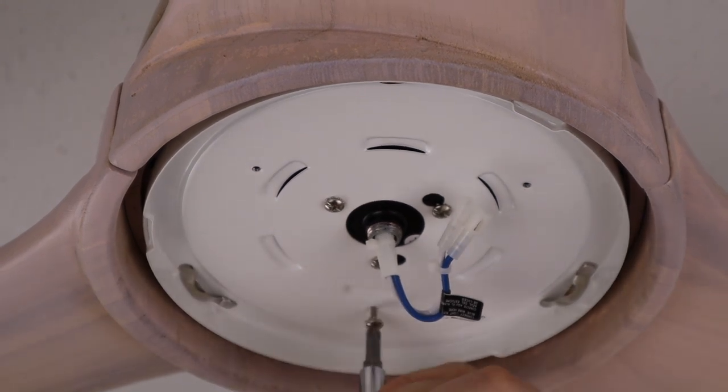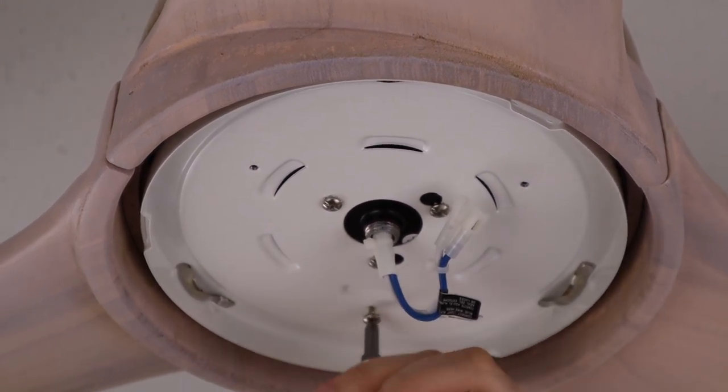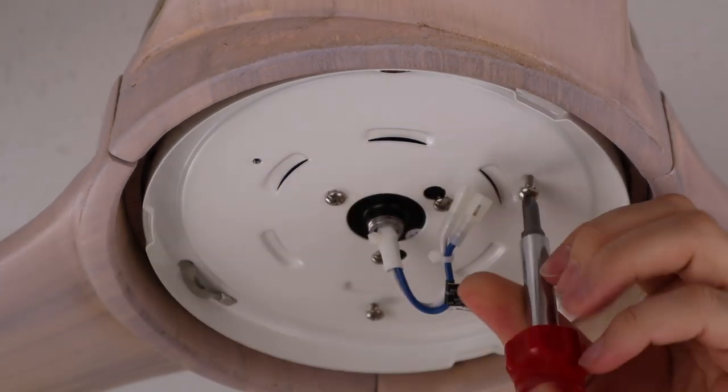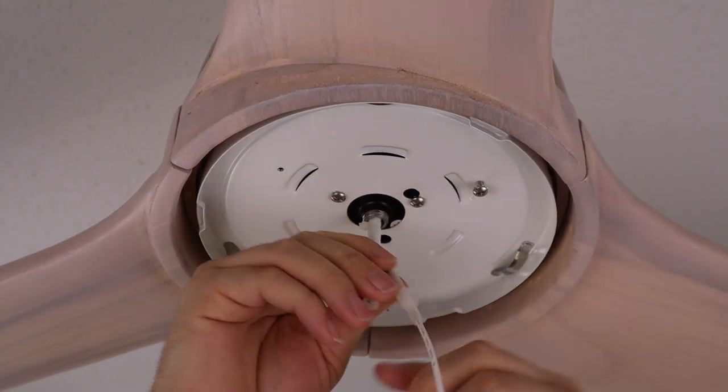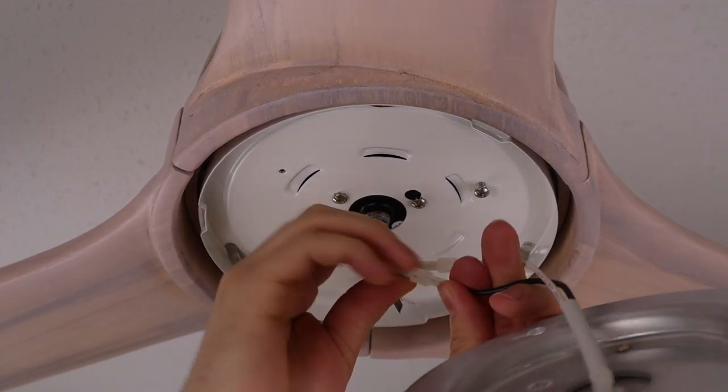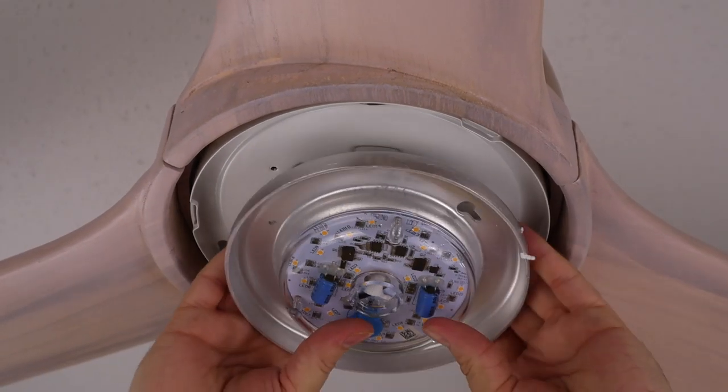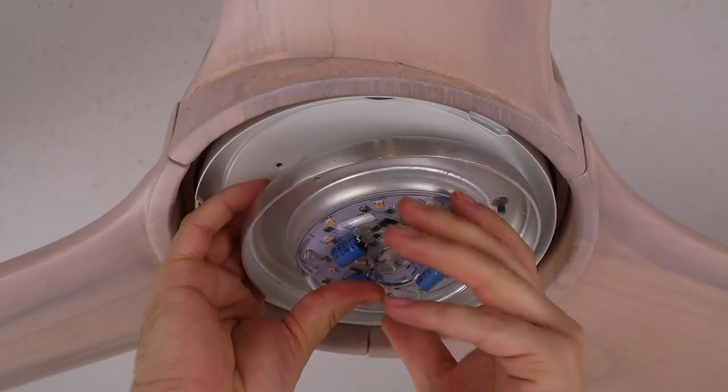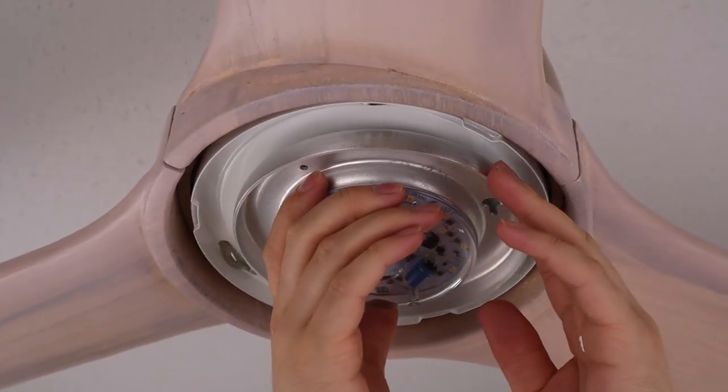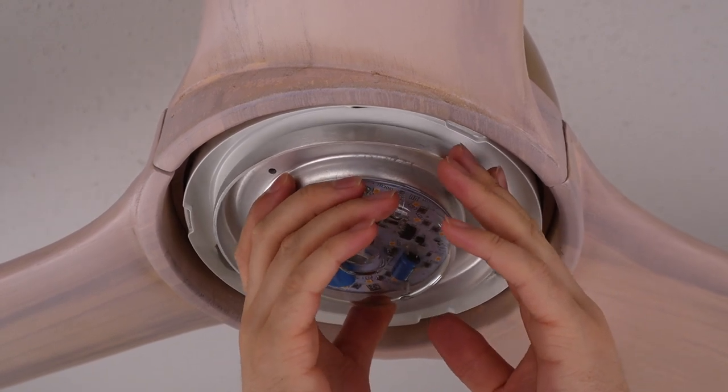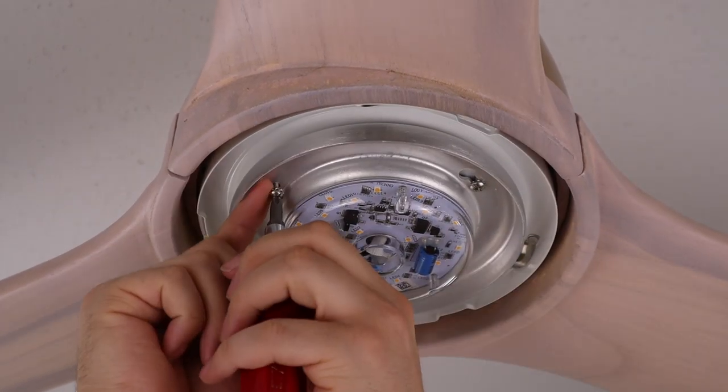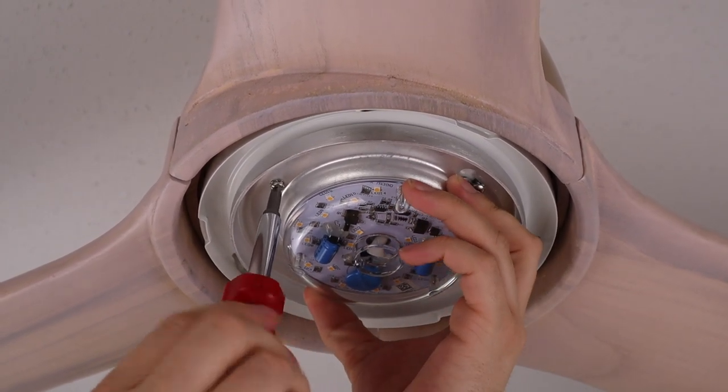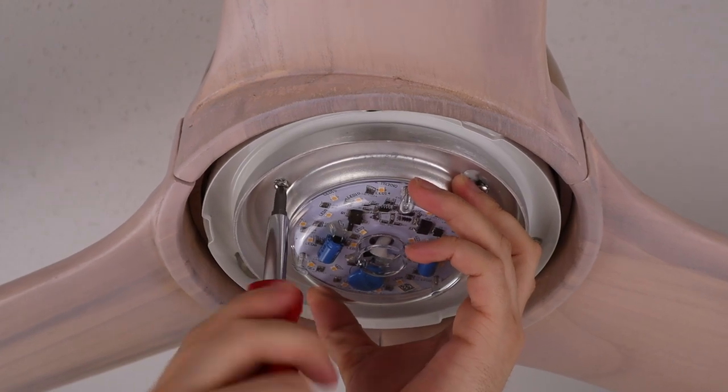Thread two more screws about halfway into the upper switch housing; again, it does not matter which positions you choose. Connect the LED assembly using the single pin connectors. Raise the LED assembly to the fan, engaging the keyhole slots onto the screws. Ensure the wiring is tucked down into the recess of the LED assembly. Insert a third screw into the remaining position, then tighten all securely, ensuring no wiring is getting pinched.